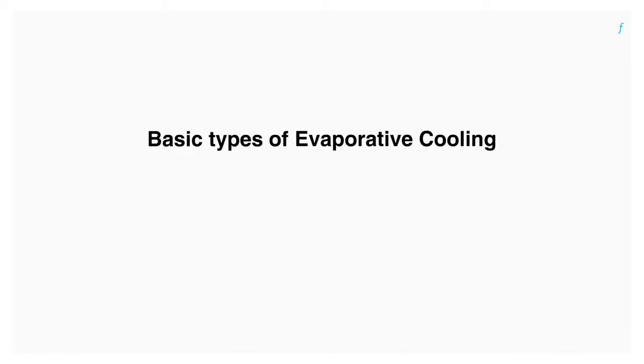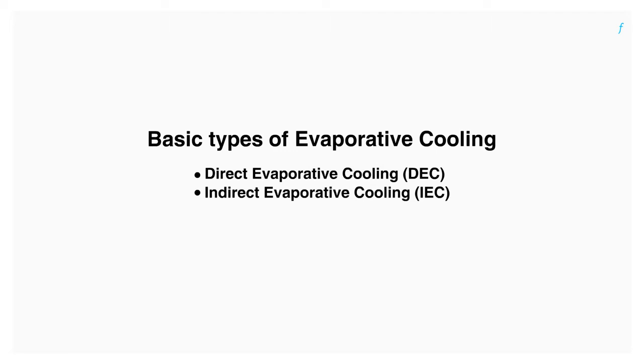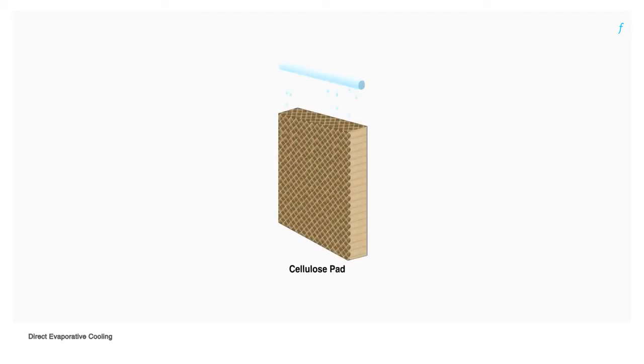Now that we know what evaporative cooling is, let's look at the two types: direct evaporative cooling and indirect evaporative cooling. In direct evaporative cooling, warm air from outside is pulled through moist pads where it is cooled due to evaporation. The cool air with added moisture is then drawn to the space requiring cooling using a blower.